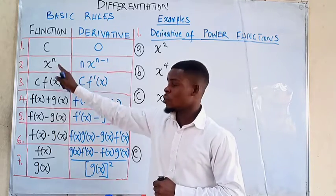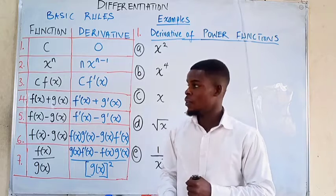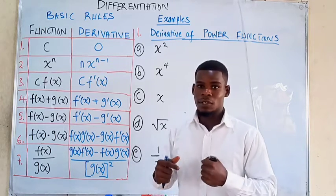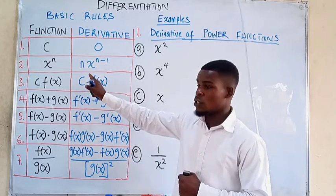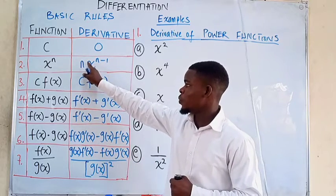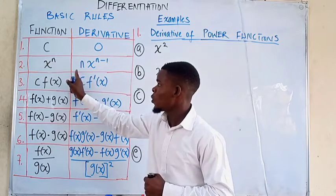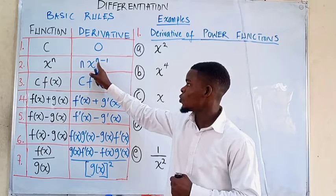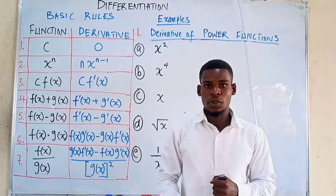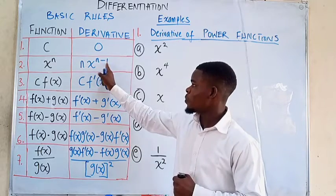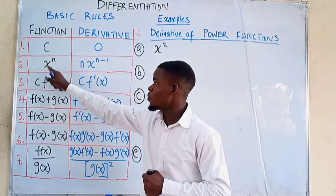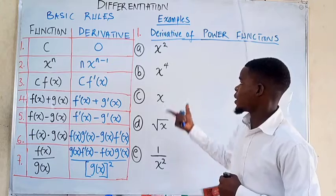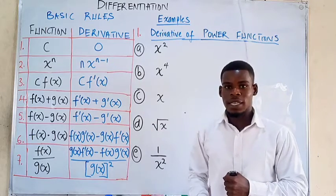In this video we want to concentrate on the power function. When we have x raised to some power n, where n is any real number, the derivative follows this form: you bring down the power n to the front, multiply with x, and raise it to n minus 1 — so you subtract 1 from the original power. We have some examples that illustrate this second rule.